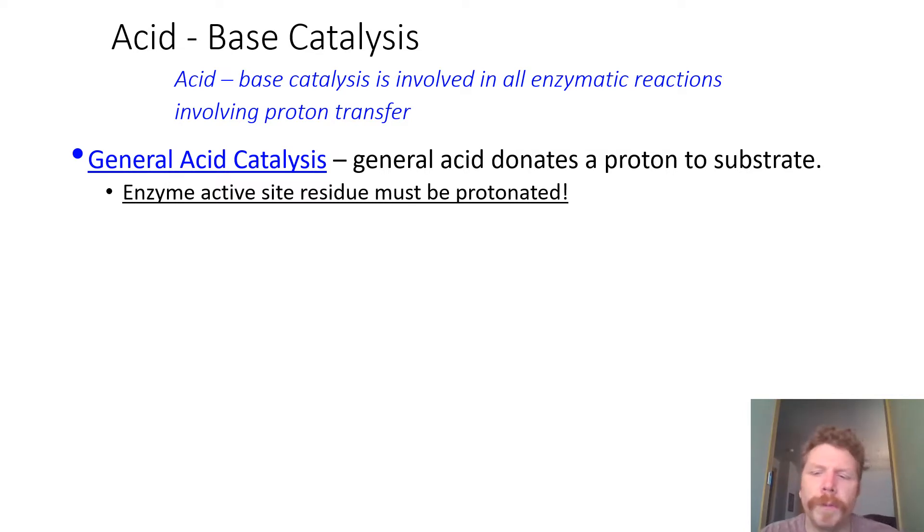So would an aspartic acid residue at a physiological pH be a good candidate? Well think about that R group and think about that pKa of that R group. Aspartic acid, glutamic acid, they're both going to have a pKa of around 3.7 or below. And so at a physiological pH, are those residues going to be protonated? They're not. So do they have the proton that they can transfer? No, they don't.